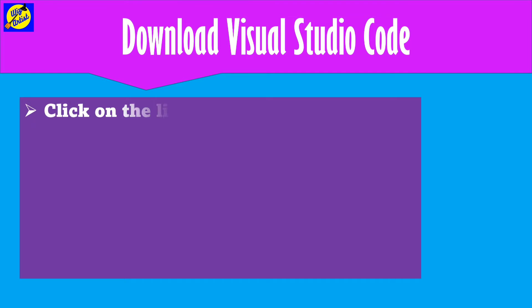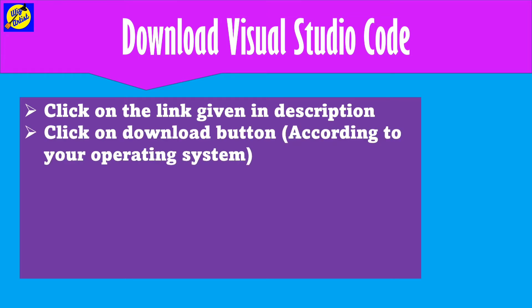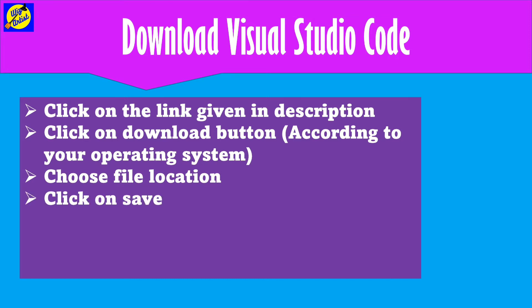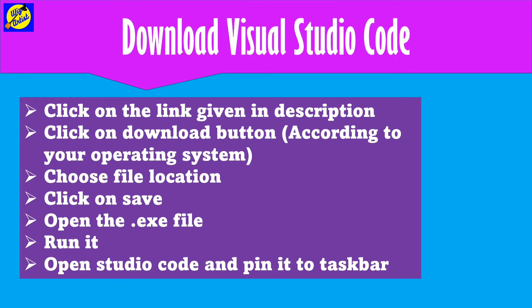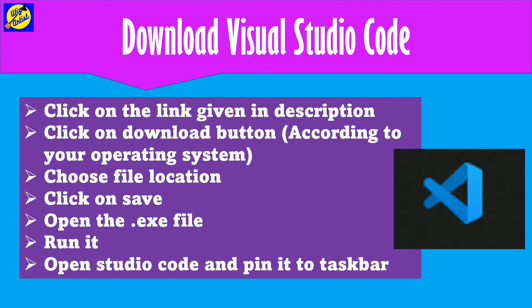Before starting with the coding, let's see how we can download Visual Studio Code. Click on the link given in the description box. A website will open where you click the download button — there will be three to four options, so select according to your operating system. Choose a file location, save the .exe file, open and run it, and it will be installed on your computer. Then open Visual Studio Code and optionally pin it to the taskbar for easy access. Note that Visual Studio Code is different from Visual Studio 2019 — we want Visual Studio Code.